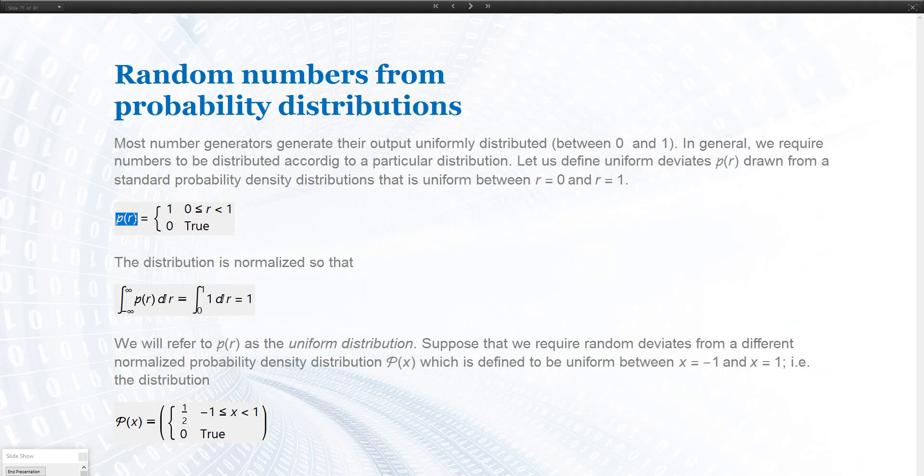So that means uniformly distributed. The probability distribution can be described as the probability is 1 in the range between 0 and 1 and 0 otherwise. It's normalized so that the integral from minus to plus infinity over P(r) is 1, which is basically the same as taking the integral over this, over the first row here from 0 to 1, because it's 0 otherwise anyways. So that's our uniform distribution.